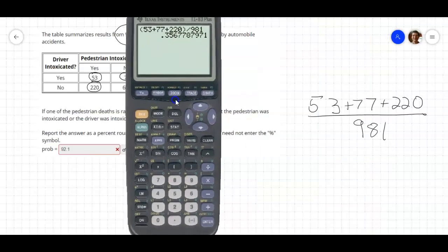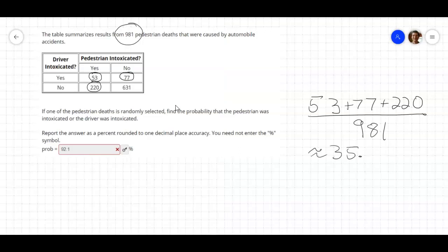Okay, now there's another approach to this problem, and that is the probability of A or B equals the probability of A plus the probability of B minus the probability of A and B.